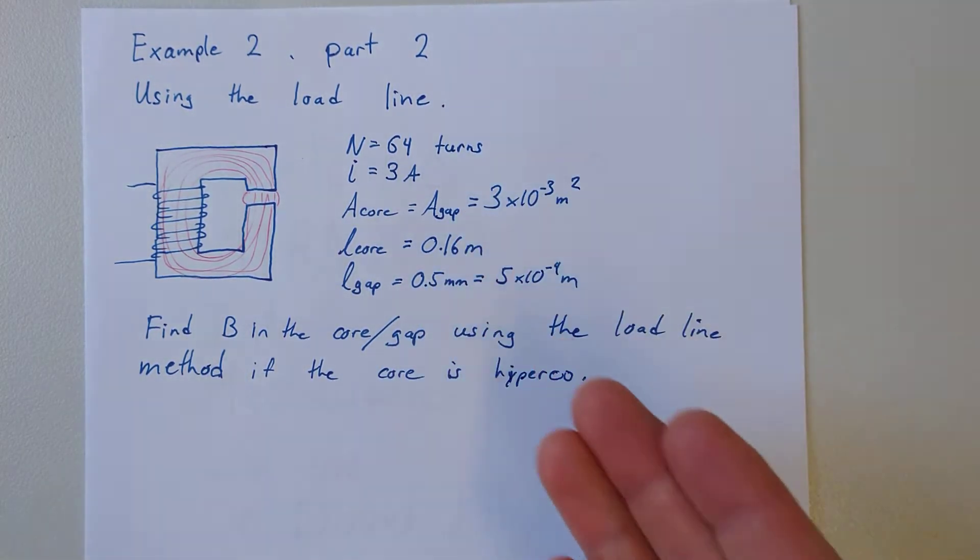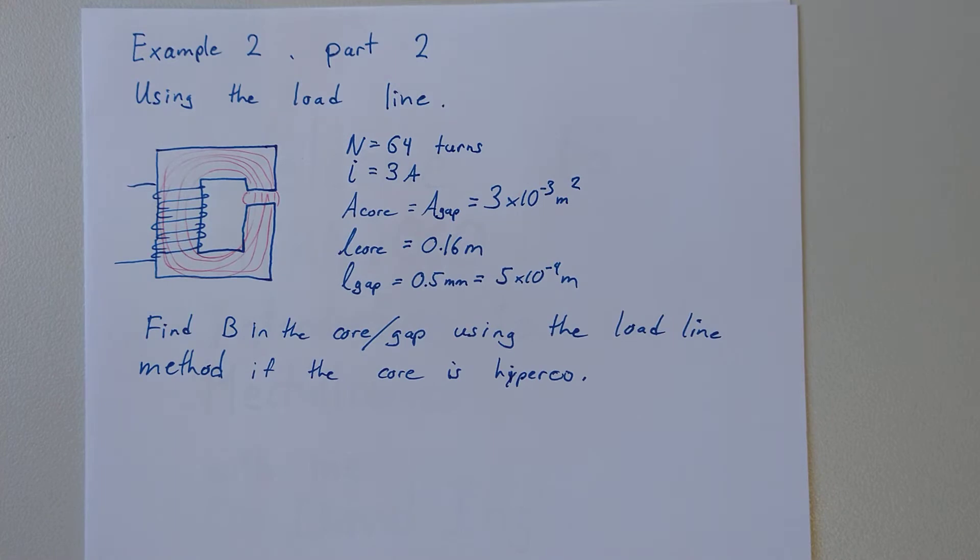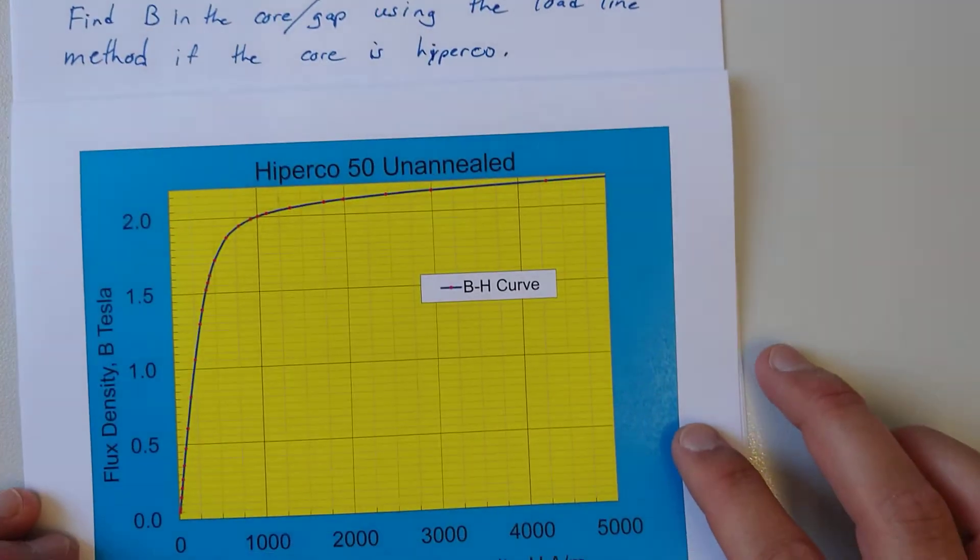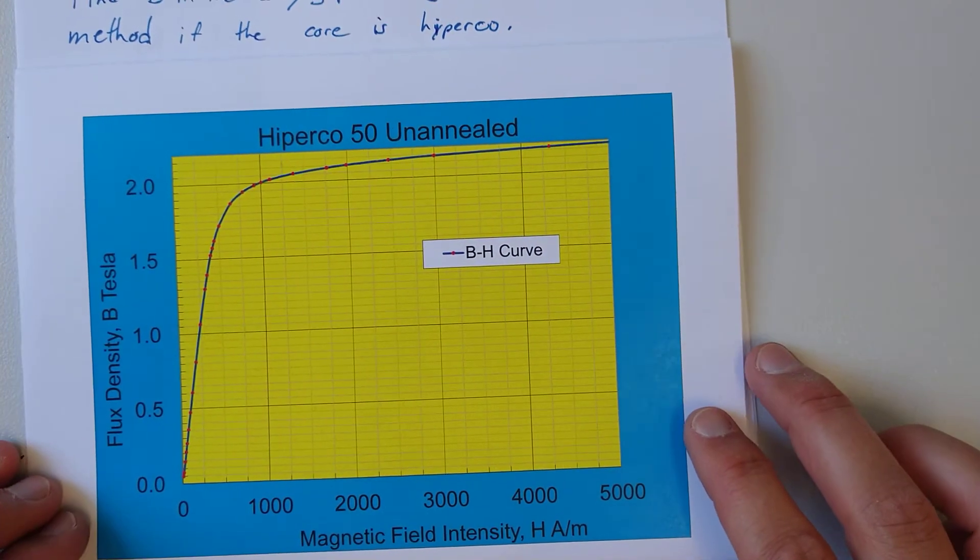So here's an example with numbers of a simple core. The material will be the same as in the first example—that's Hyperco. Here's the BH curve in a linear plot for that material.